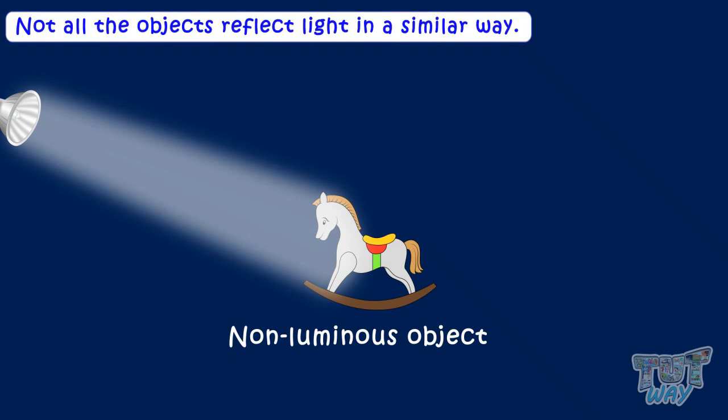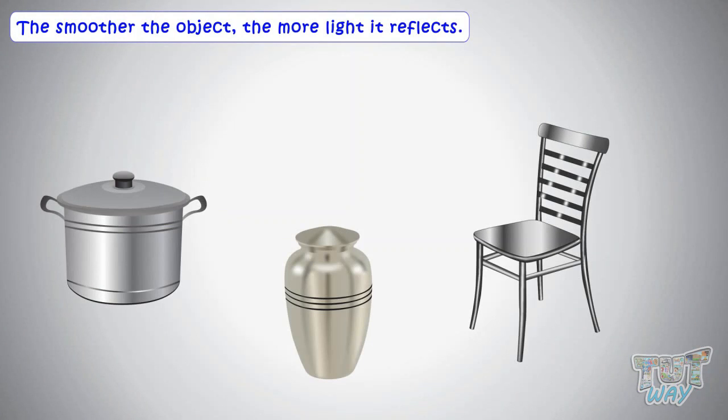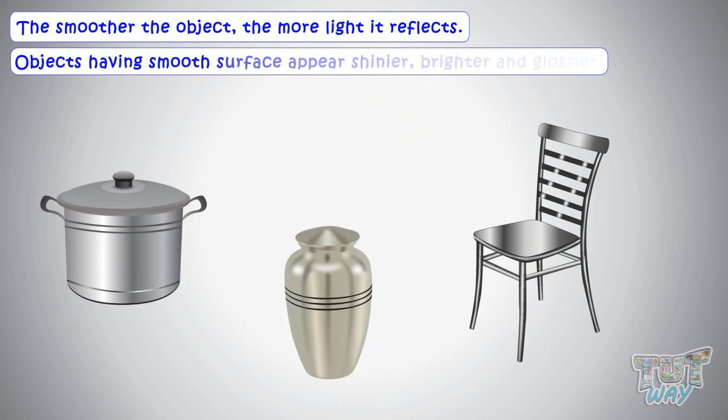But not all the objects reflect light in a similar way. The smoother the surface, the more the light it reflects. This is why objects having smooth surfaces appear shinier, brighter, and glossier.